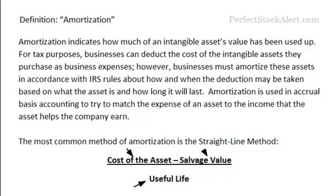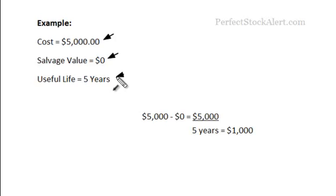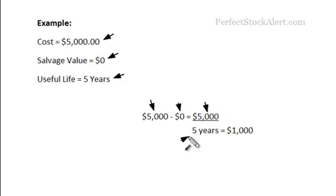Let's look at a quick example using a random fictitious company. Let's say company XYZ goes out and buys a license to do business in some particular country or province, at a cost of $5,000. You take the total cost and the salvage value is zero — think about it in terms of the license. The license gives you the right to do business for a useful life of five years. At the end of that five-year period, what is that license going to be worth? Zero. You can't resell it, there's no salvage value. The math is simple: $5,000 minus zero leaves you with $5,000, divided by the useful life of five years — meaning you would amortize $1,000 every year.